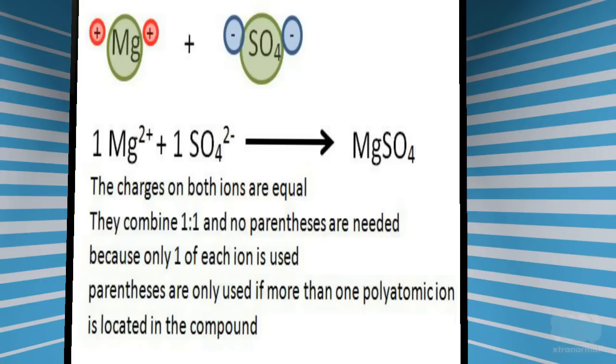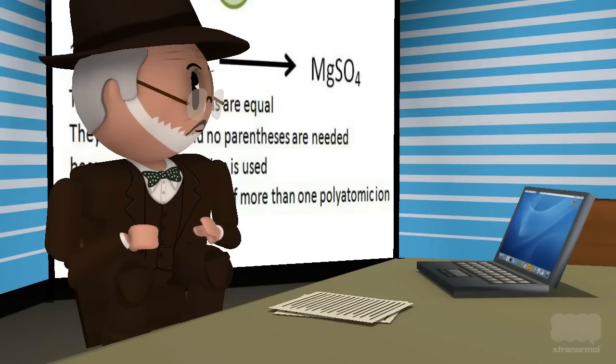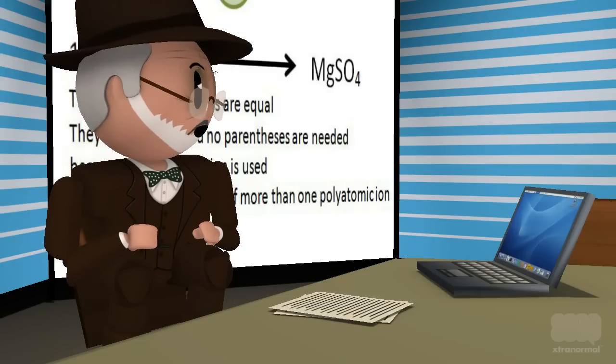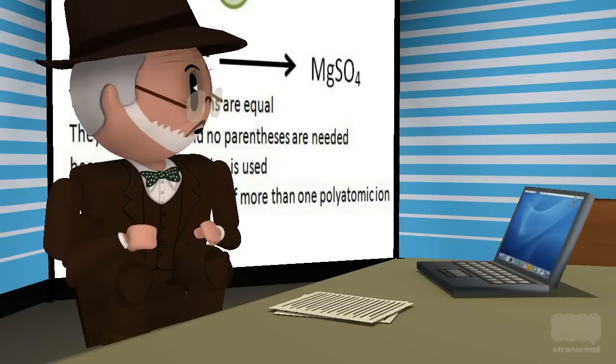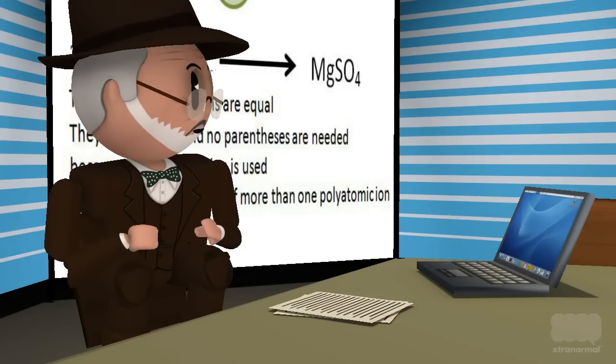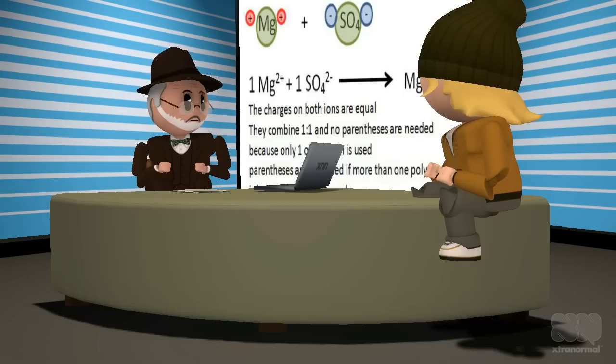Oh, so when there is only one polyatomic ion, you do not need to put it in parentheses? Correct. Chemists know all the polyatomic ions and treat them as if they were a simple ion and only put them in parentheses when there is more than one polyatomic ion in the compound.